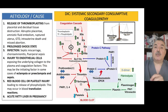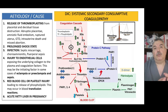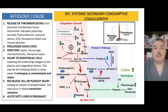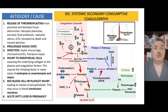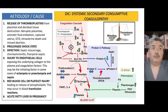Disseminated intravascular coagulation is a systemic, secondary, consumptive coagulopathy. Systemic means it occurs in the whole body; secondary means there must always be a cause. The causes include release of thromboplastin into the circulation — due to abruption, amniotic fluid embolism, intrauterine fetal death, retained fetal demise, gestational trophoblastic disease, and uterine rupture. Prolonged shock state or bleeding — even after major surgery — will also lead to consumptive coagulopathy.